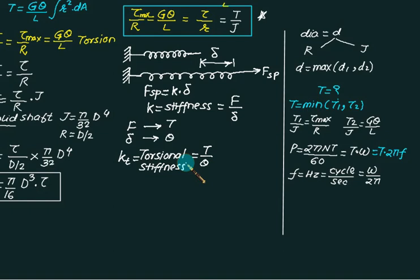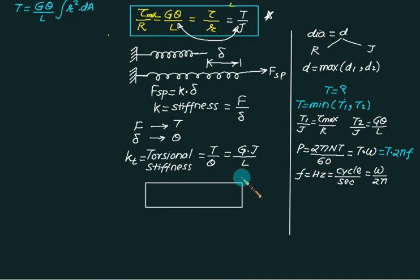Now T divided by theta, so you have to collect these two terms and solve for T by theta. Then you will get probably this one is G multiplied by J divided by L. So G multiplied by J divided by L will be your torsional stiffness, newton meter per radian. So meaning of this term is that suppose you apply a torque like this on a shaft.